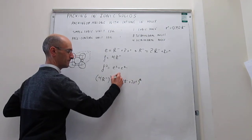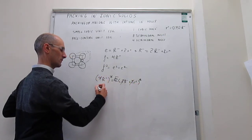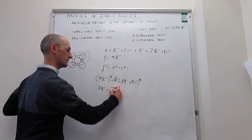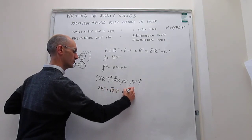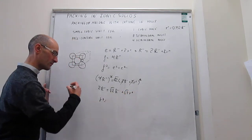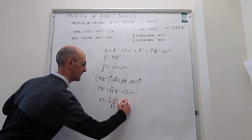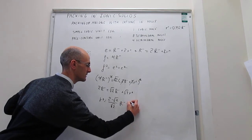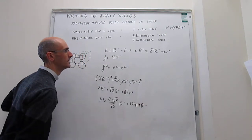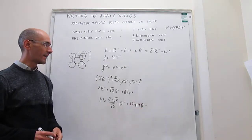So we take the square root, and then we can divide everything by 2. To give 2R- is going to be equal to the square root of 2R- plus the square root of 2R+. Or in other words, R+ is going to be equal to (2 - √2)/√2 times R-, which is 0.414R-. So that is going to be your limiting cationic radius as a function of the anion radius.